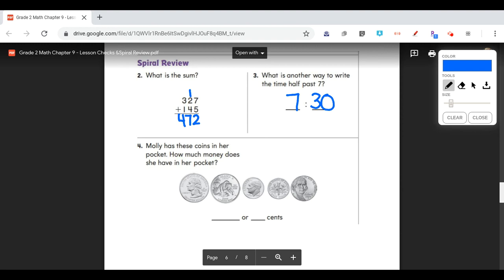And the next one says, Molly has these coins in her pocket. How much money does she have in her pocket? So let's label how much each coin is worth. They've already put them in order. So we have 25 cents for our first quarter. Then we have another quarter that's 25 cents. Then we have a dime, which is 10. Another dime, which is 10. And then a nickel, which is 5 cents. So if I'm counting this change, I would say 25, 50, 60, 70, 75 cents. So we would say that's 75 cents.